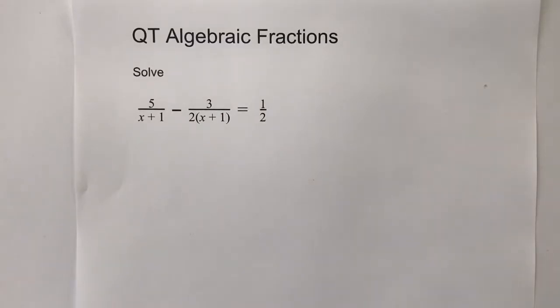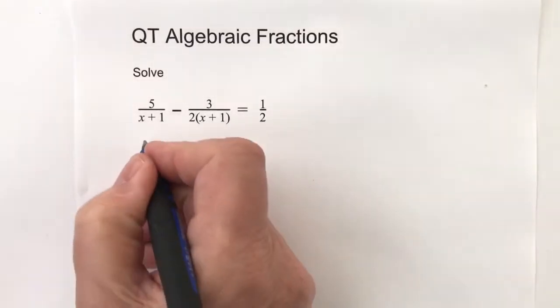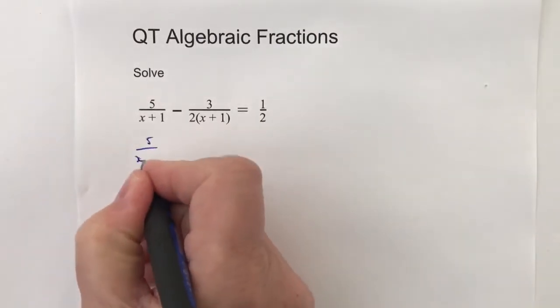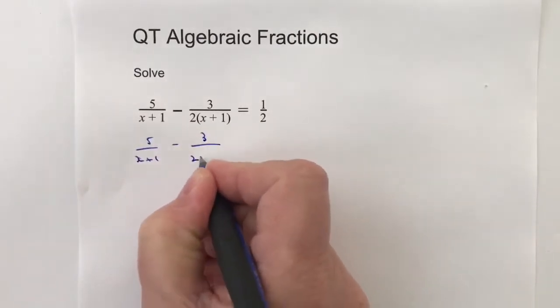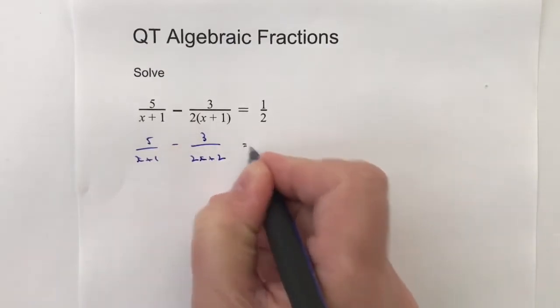So there's a couple of things I think we can do to begin to make our life a little bit easier. The first thing is I'm going to get rid of the brackets of the denominator of the second fraction and the way I'm going to do that is I'm just going to multiply them out. So I can write that as 5 over x plus 1 minus 3 over 2x plus 2 equals a half.